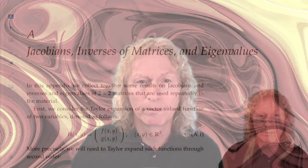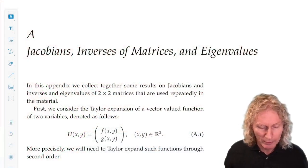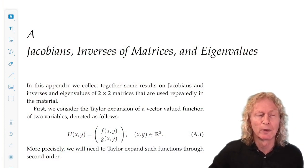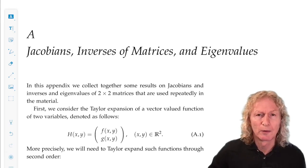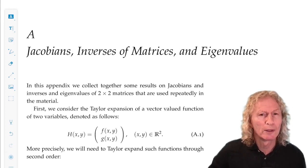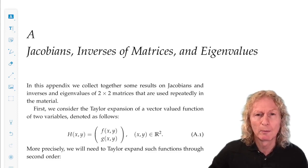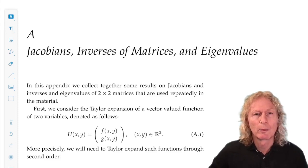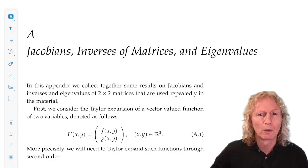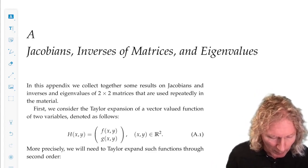Welcome back. I want to go through the appendices at the end of the book, and in particular, in this lecture, I want to start with Appendix A. So this is about Jacobians, inverses of matrices, and eigenvalues. You've seen most of these concepts before, I believe, and I just wanted to collect them together in one place in a form that will be useful for doing the problems at the end of each chapter.